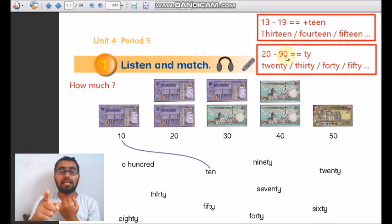Notice here we have 'ty' not 'teen', so we can differentiate between the two. We'll have 20, 30, 40, 50, 60, 70, 80, 90, and we also have a hundred which is 100.